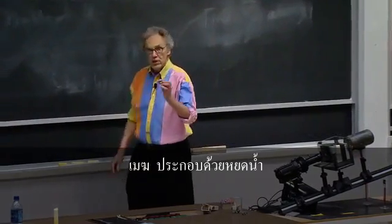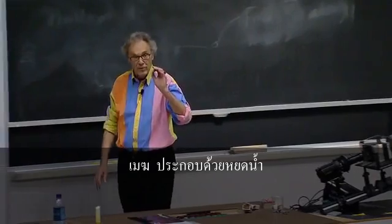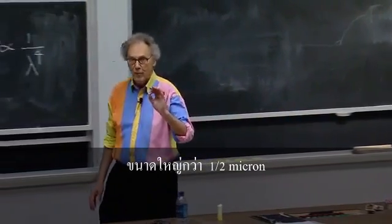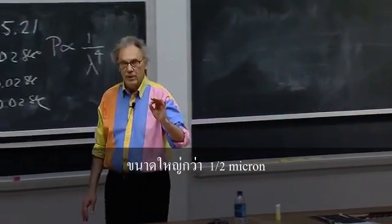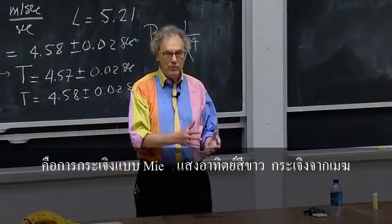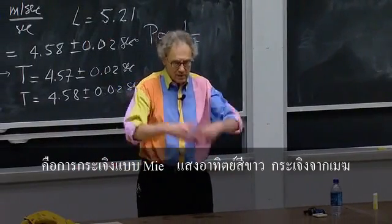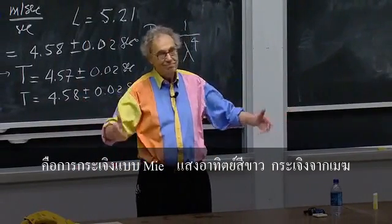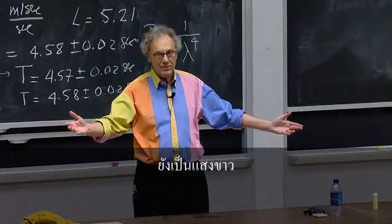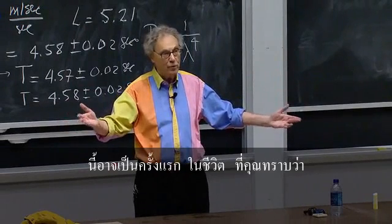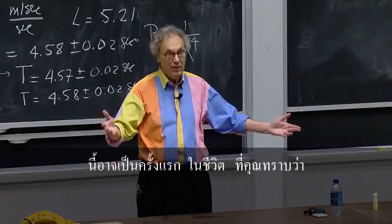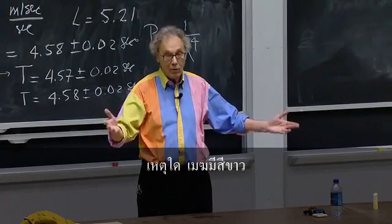Clouds consist of very small water drops, surely larger than half a micron, which is Mie scattering. So the white light of the sun scattered off a cloud — white remains white. So you now, for the first time in your life, may have an explanation for why clouds are white.